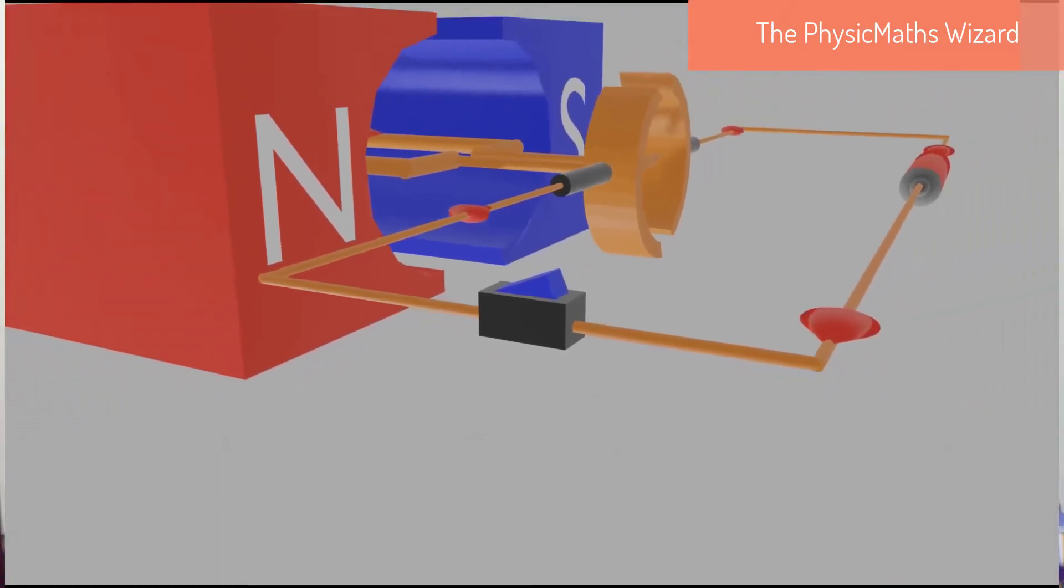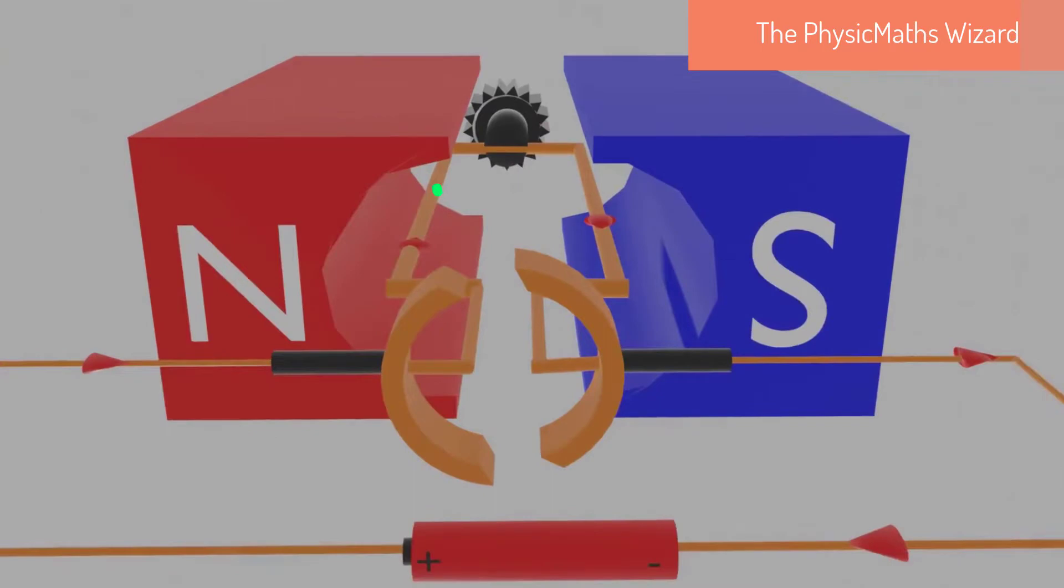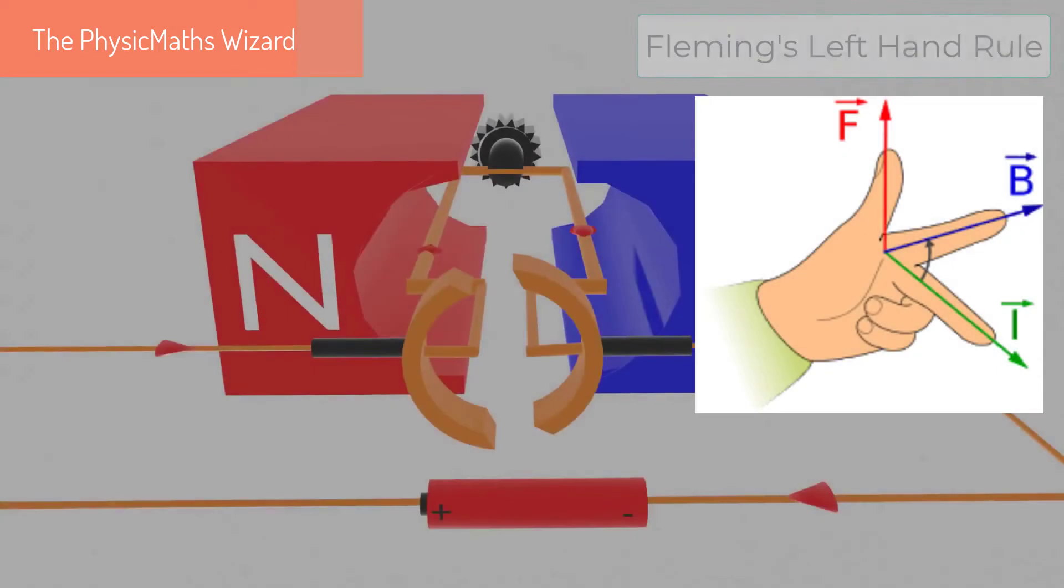When an electric current is supplied to the armature, a Lorentz force is exerted on each side of the armature coil. The direction of the force is given by Fleming's left-hand rule.